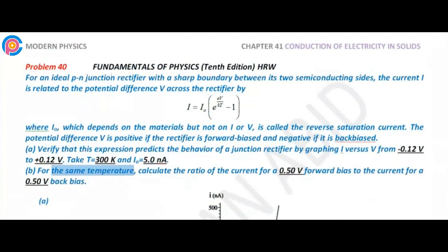For the same temperature, calculate the ratio of the current at 0.5 V forward bias to the current at 0.5 V reverse bias.